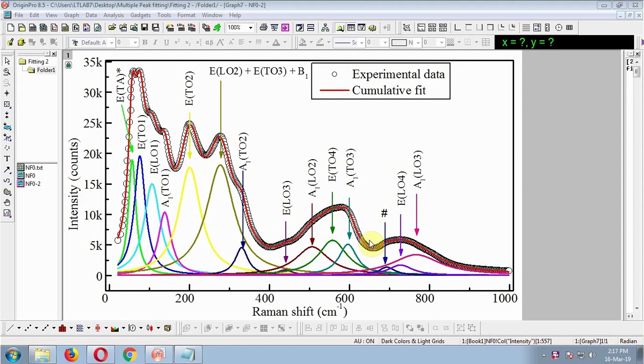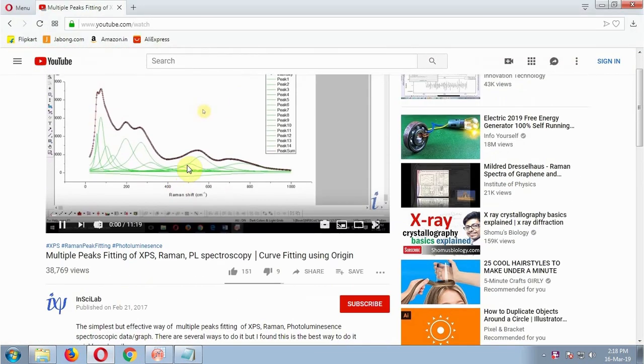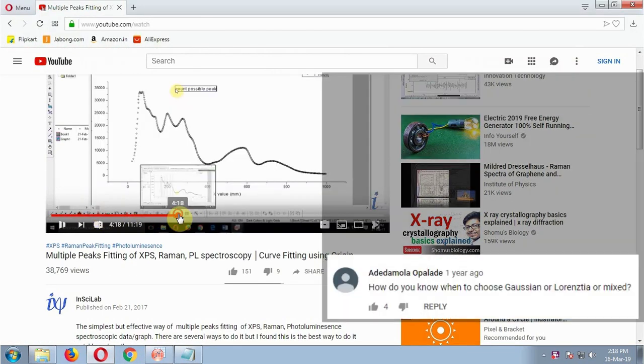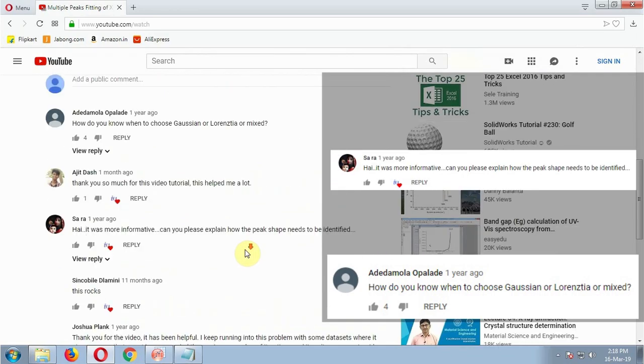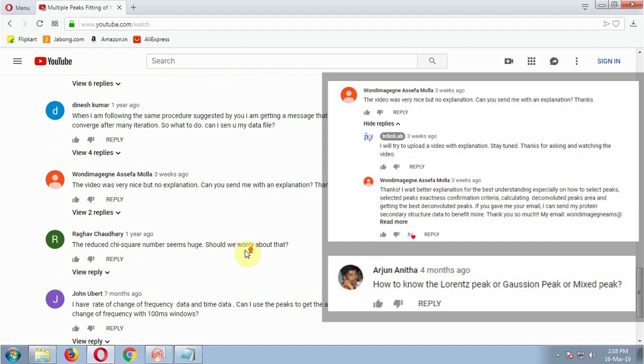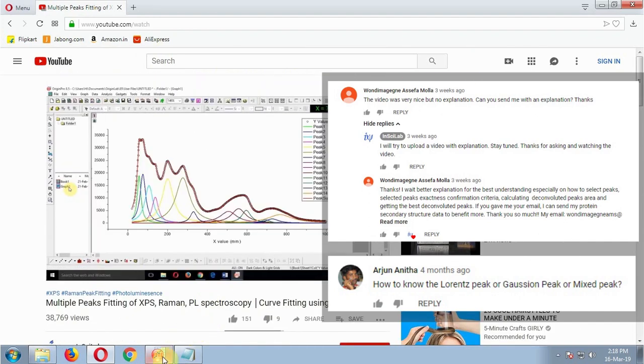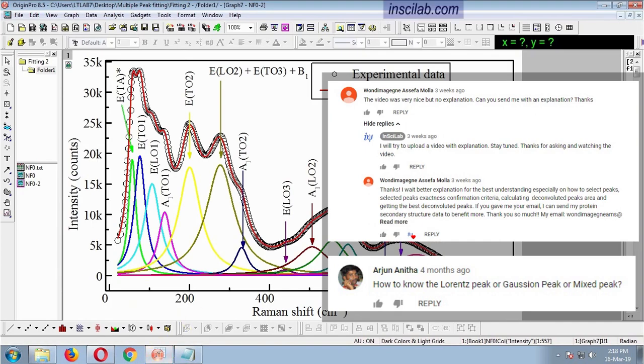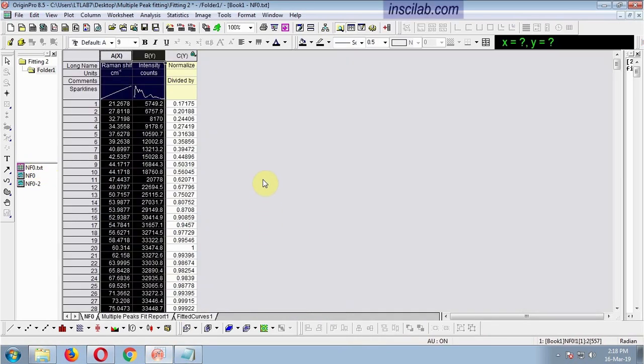This is a Raman spectrum. I have fitted it with 14 peaks. I will show how I did it. In a previous video, I showed how to do it. Many viewers asked for a similar video with explanation on several steps. Some of them also asked several questions. In this video, I will try to answer those questions and try to explain each step. Let's start from the beginning.